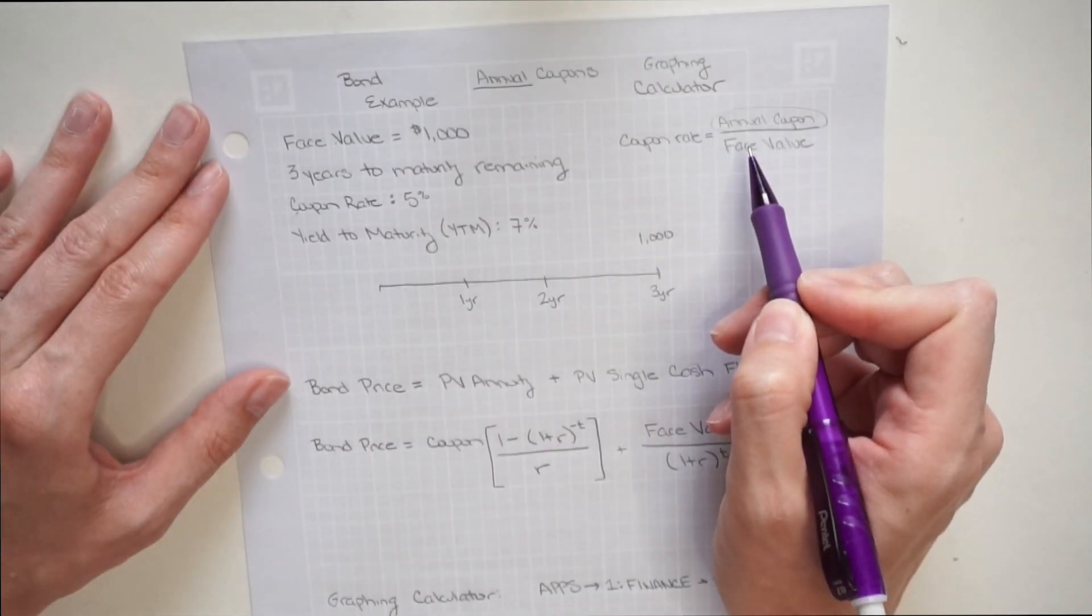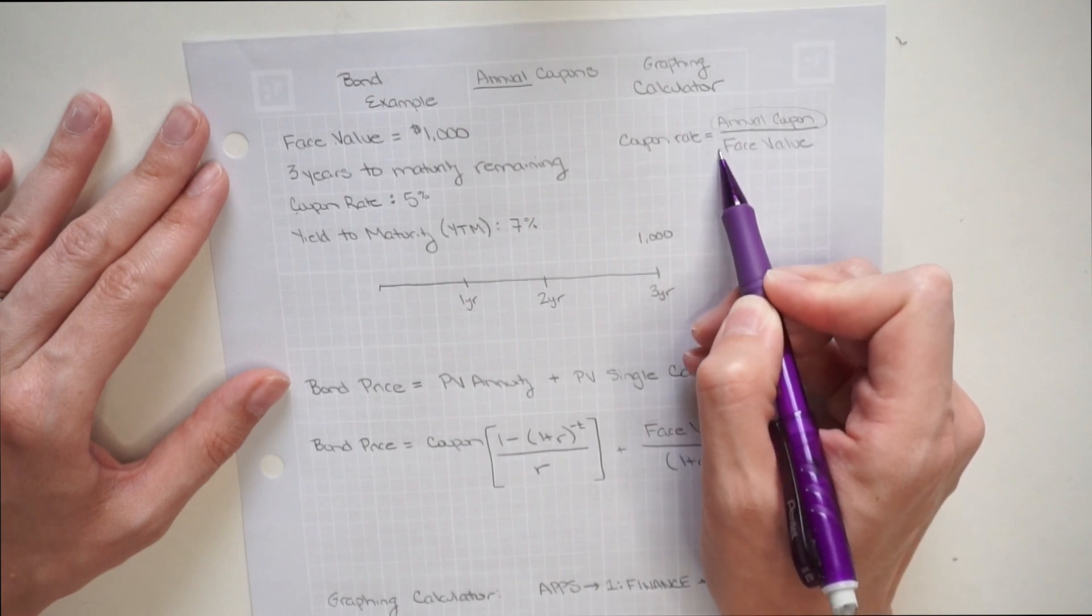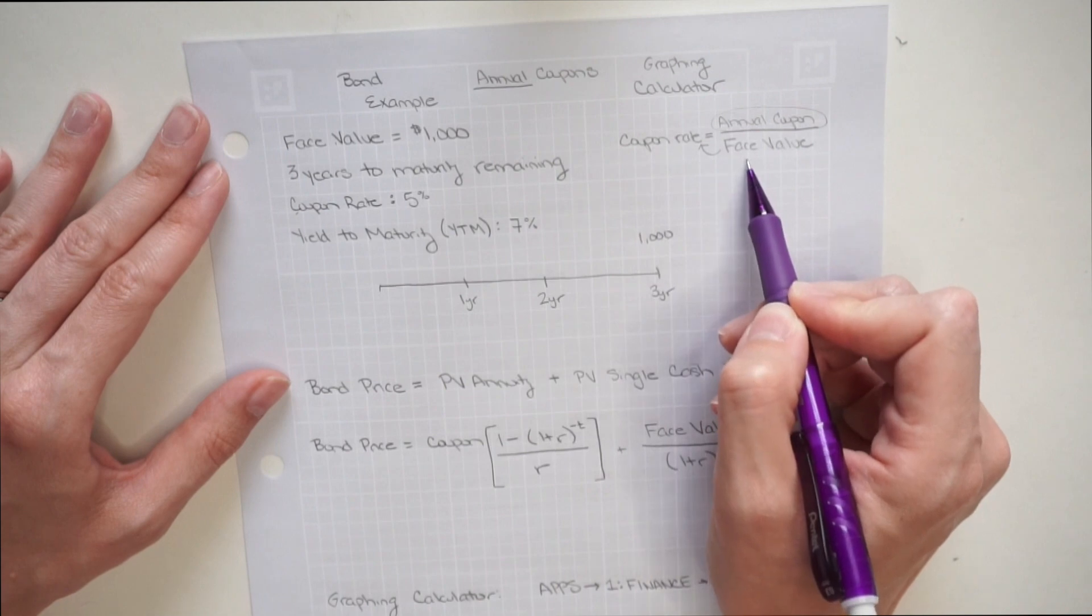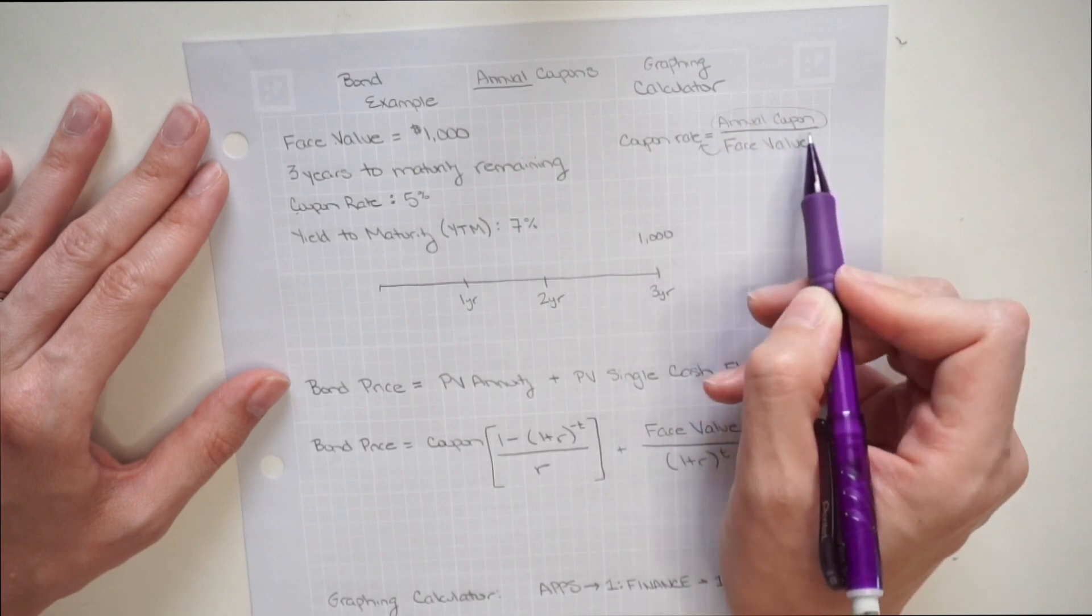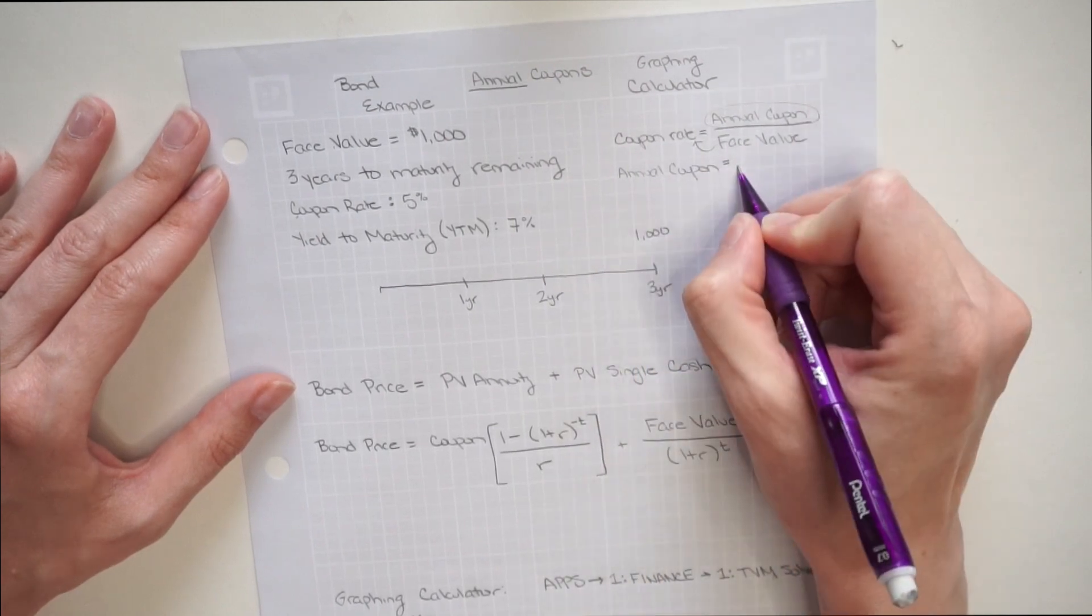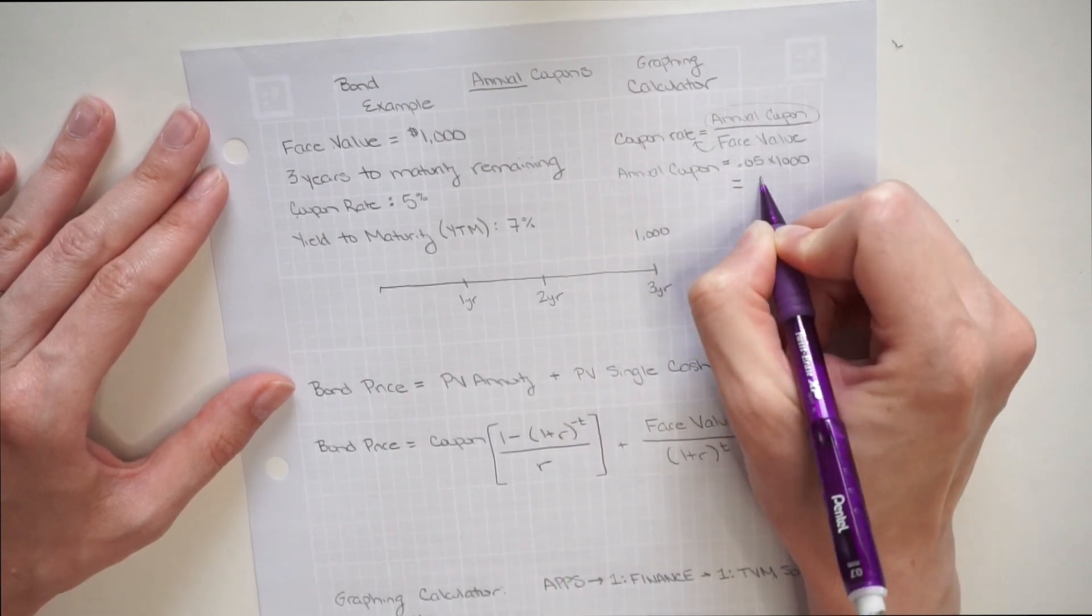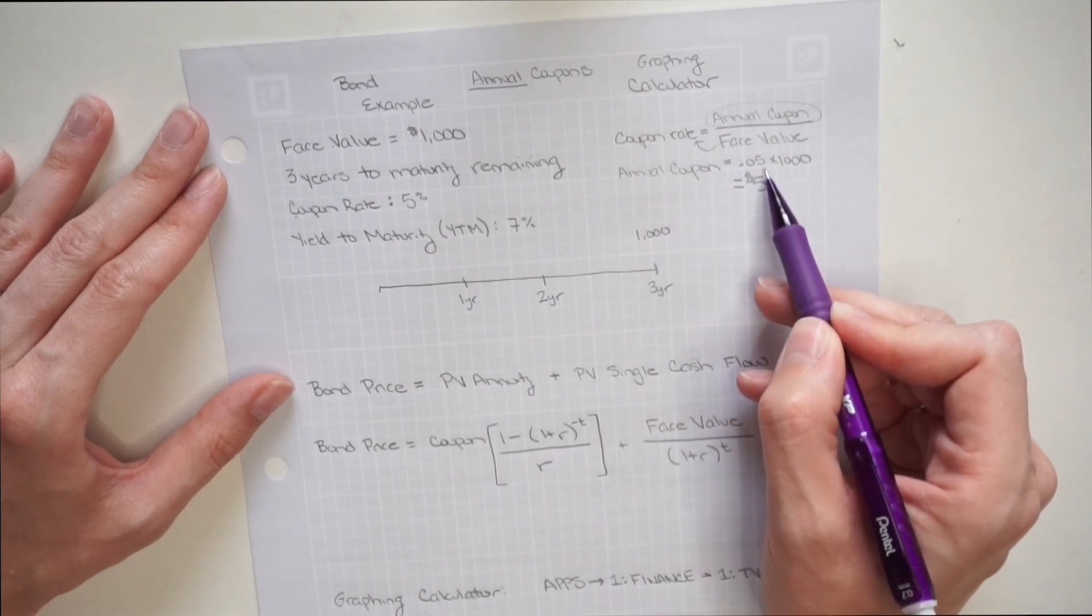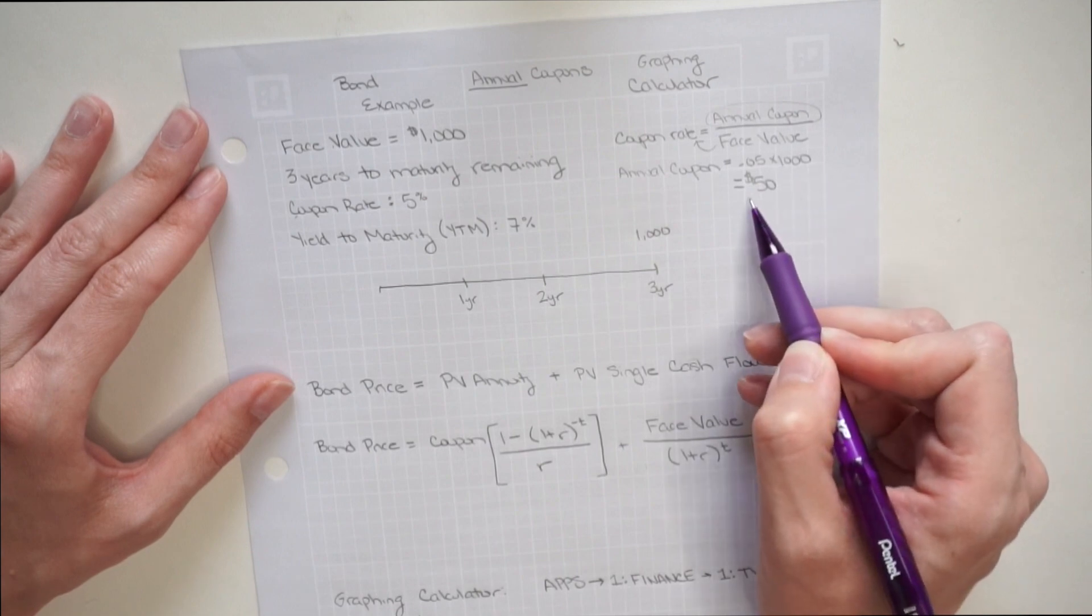So now what this tells me is I can take my face value, multiply it over here to the other side, to my coupon rate times my face value, and that will give me my annual coupon. So my annual coupon ends up being my coupon rate of 0.05 or 5% times my face value of $1,000, which is $50.